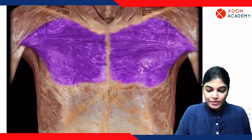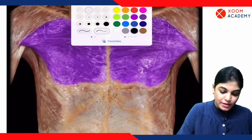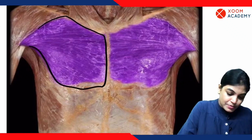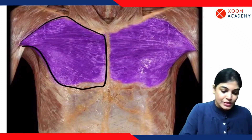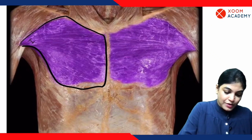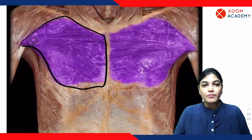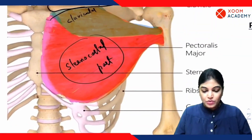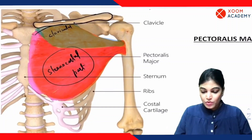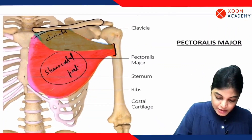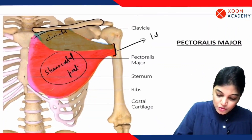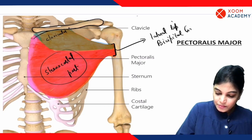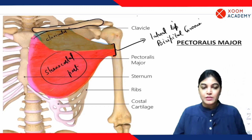In this cadaveric image you can appreciate the whole attachment of the pectoralis major muscle. It has a wide origin, but if you see the insertion — this is the site of insertion — it is inserting into the lateral lip of the bicipital groove, which is also called the intertubercular sulcus. Both terms are correct.